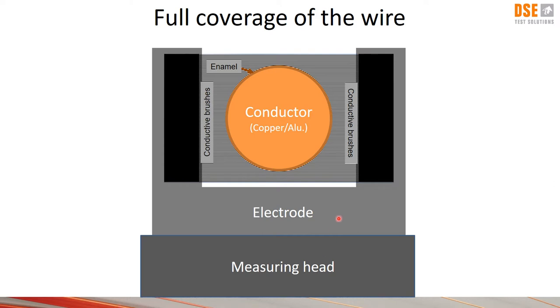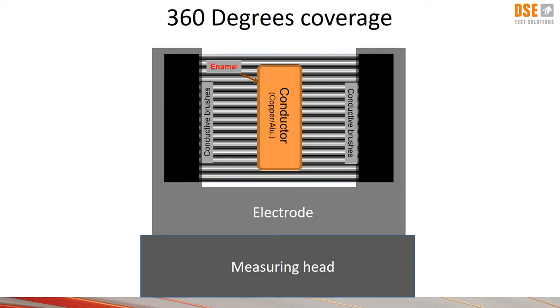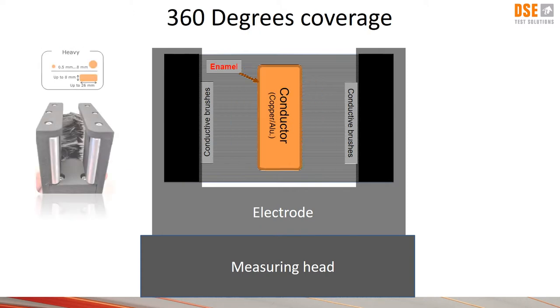As mentioned we use a set of brushes to obtain the test zone of 360 degrees around the wire. The first model is the standard model which is able to handle wire dimensions from 5 microns up to 2.5 mm. The second model is for heavier wire and has a dimension range from 0.5 to 26 mm. Note the brushes are covering also the corners which can be a problem to achieve in other systems.